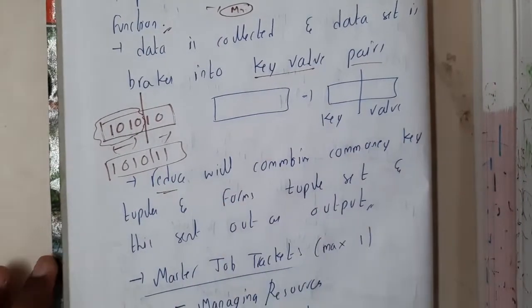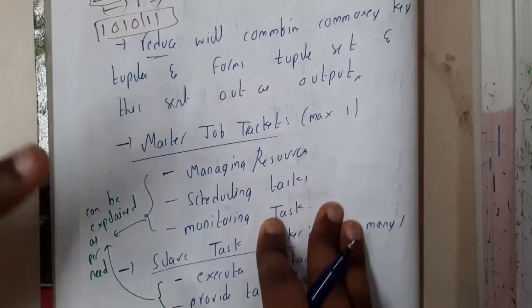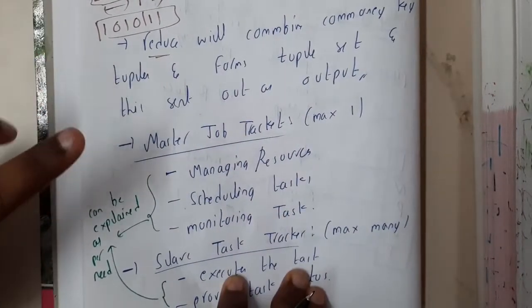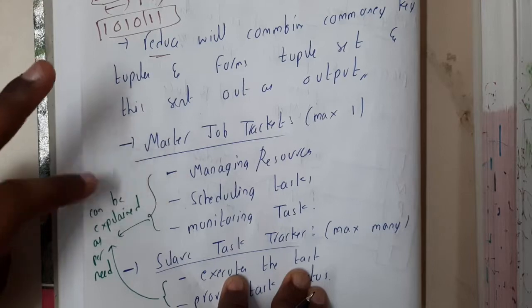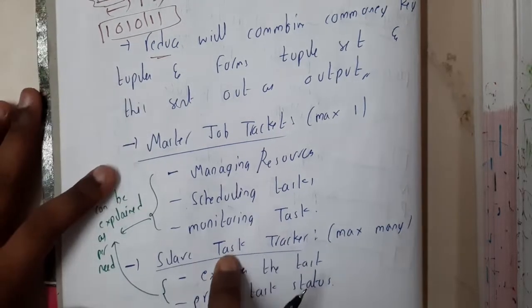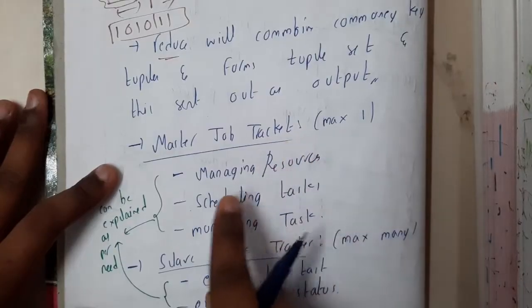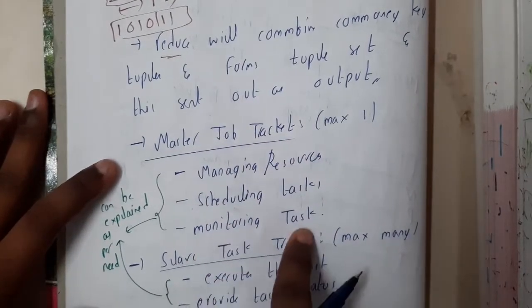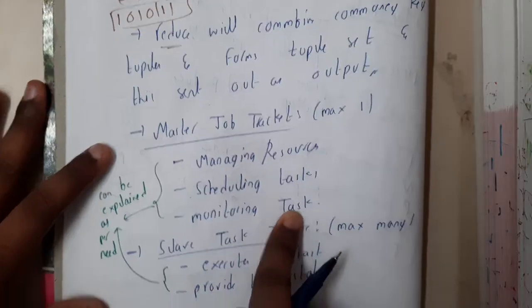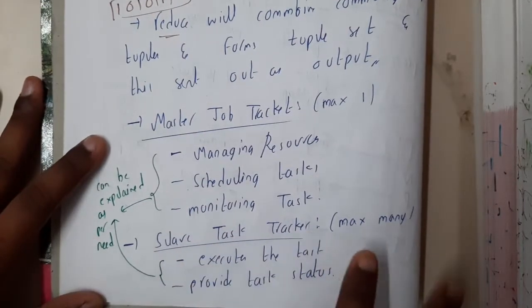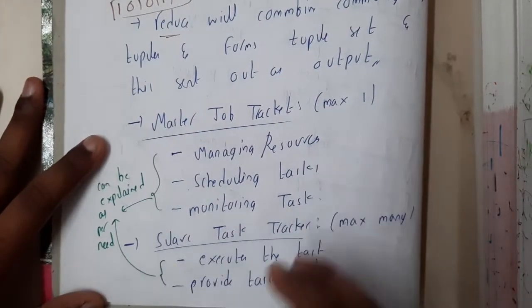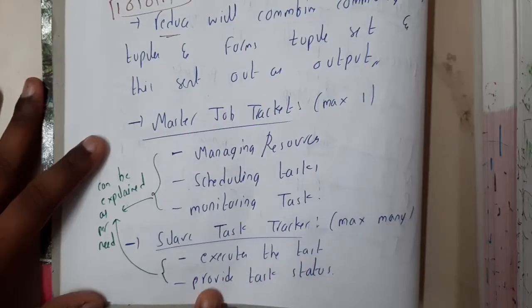Here we have two major things: the first one is a Master Job Tracker and the second is a Slave Task Tracker. Master Job Tracker will be a maximum of one, which manages the resources, schedules the tasks, and monitors the tasks. Slave Task Trackers execute the tasks and provide task status.